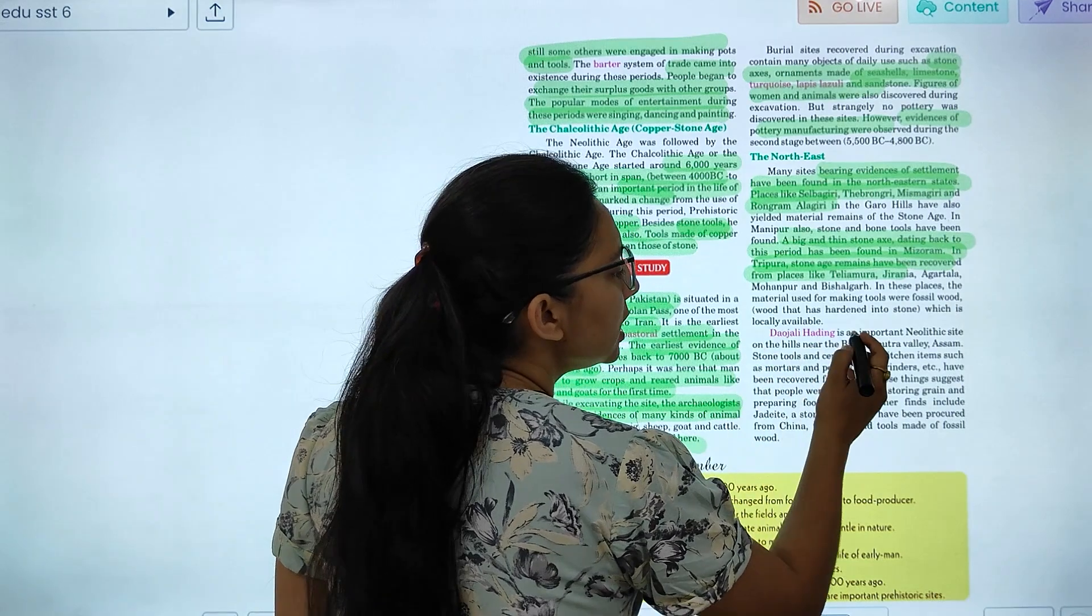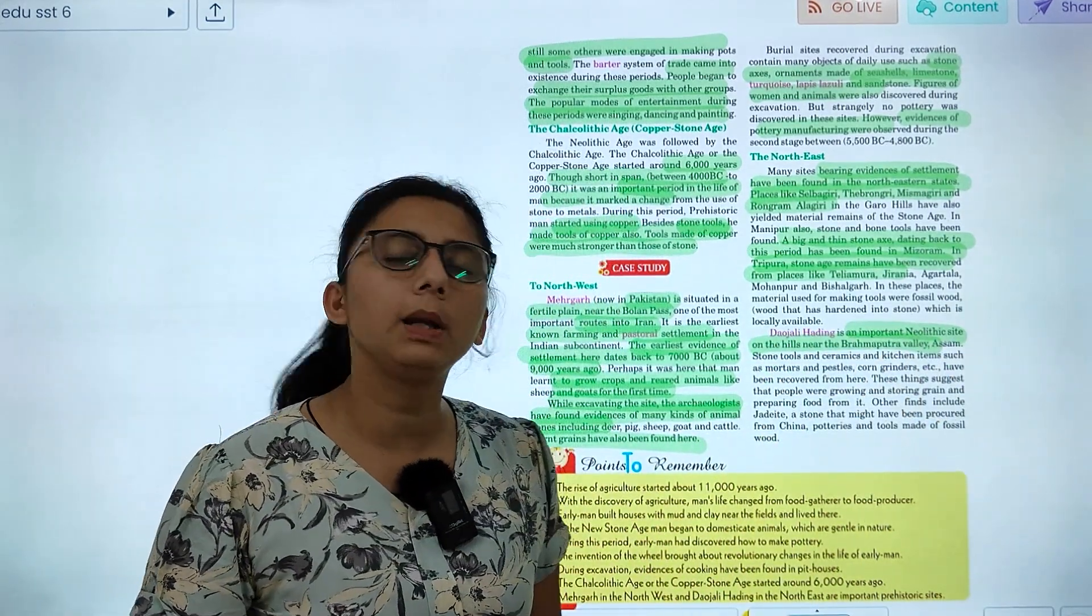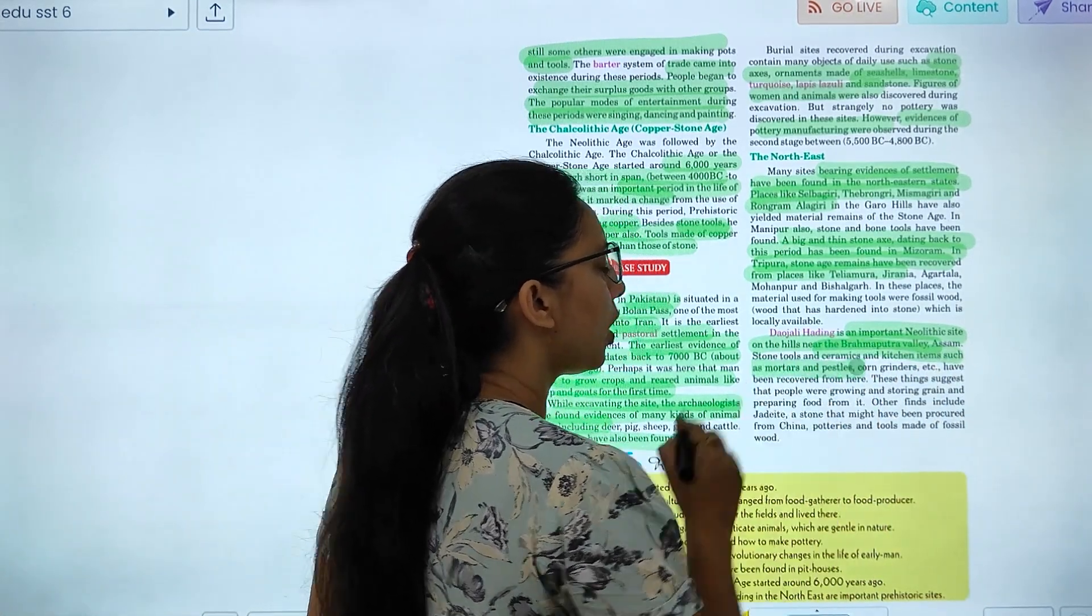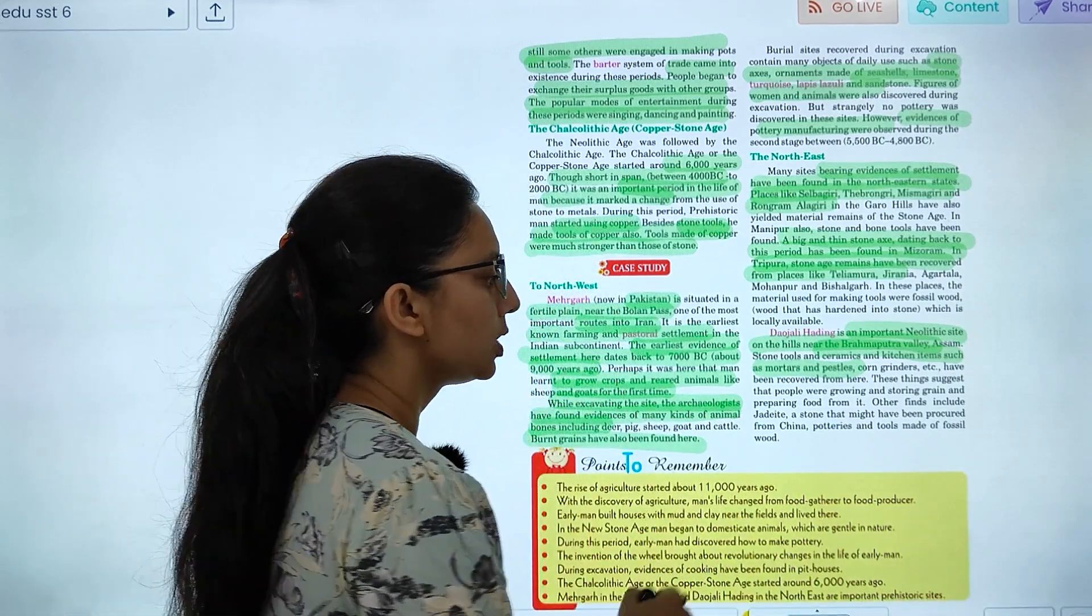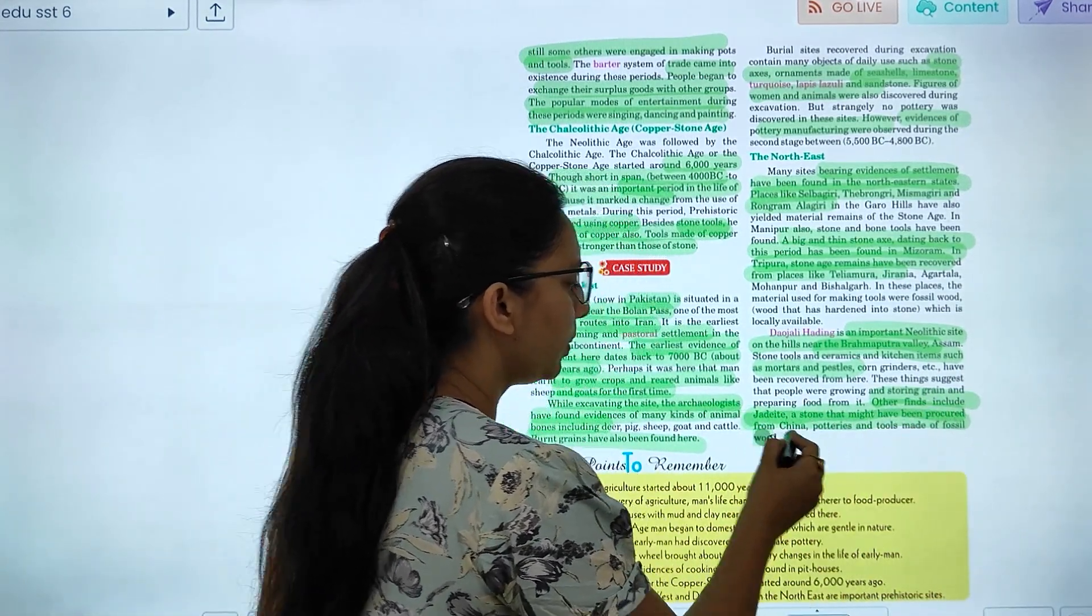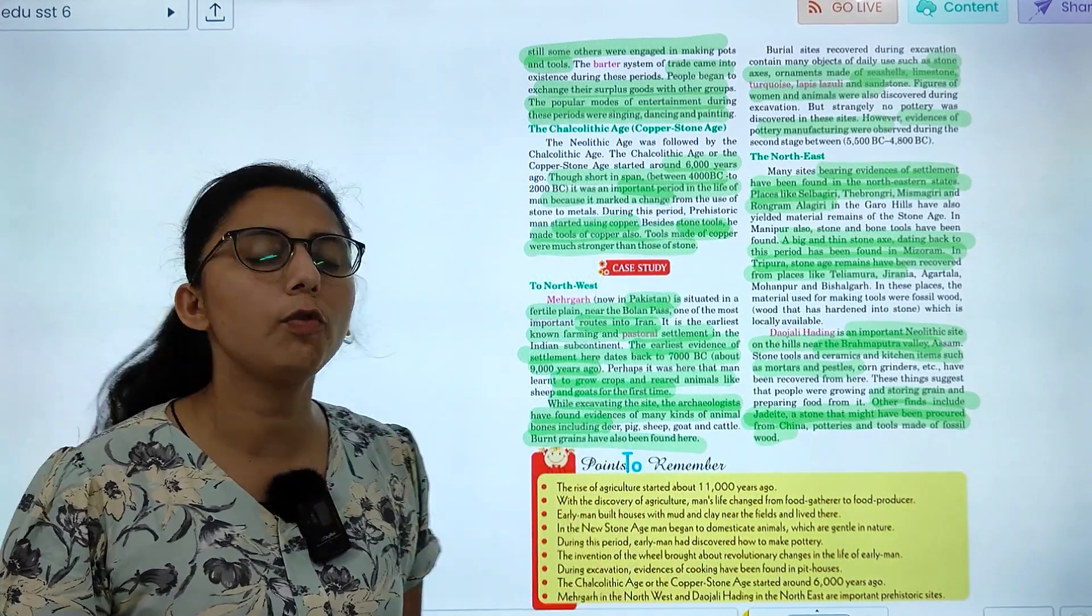Dhojali is an important Neolithic site near the Brahmaputra river in Assam, near the village. You can see stone tools and ceramic and kitchen items, such as mortar, pestles, and core grinders. And other finds include jadeite, a stone that might have been procured from China, and fossil remains.